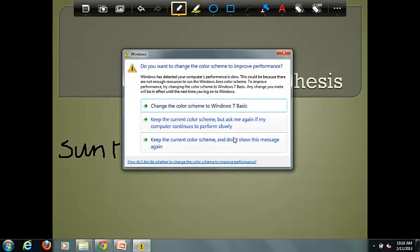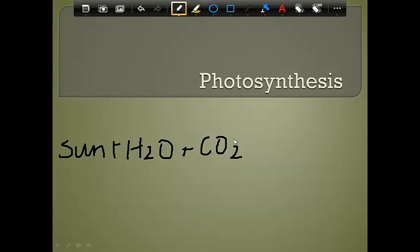Now remember, plants also go through respiration, so they also need oxygen to make ATP. This is only for photosynthesis, so we're looking at our reactants as sun energy, water, and carbon dioxide.